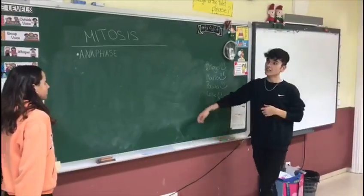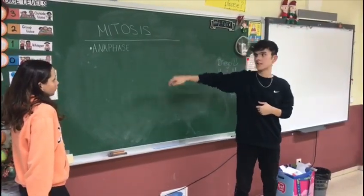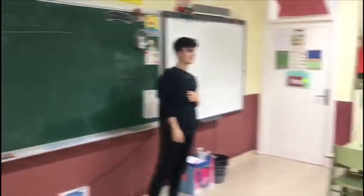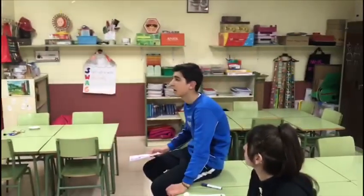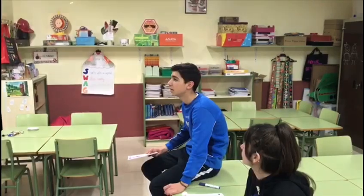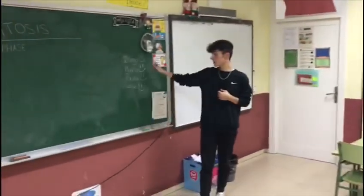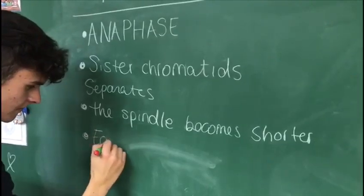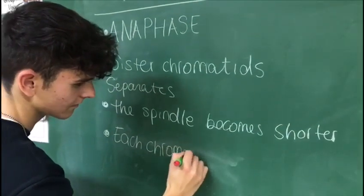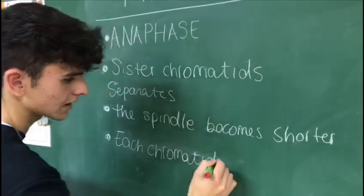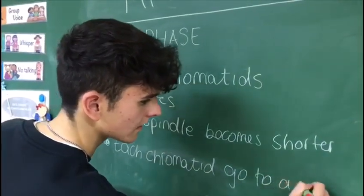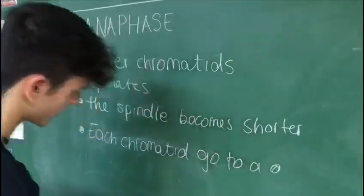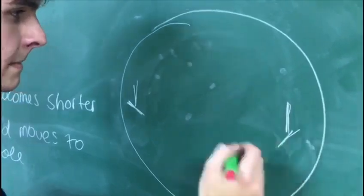The next phase of mitosis is called anaphase. Leo, what can you tell me about anaphase? I know that the sister chromatids separate. That's true. The sister chromatids separate, then the spindle becomes shorter and each chromatid moves to a different pole.